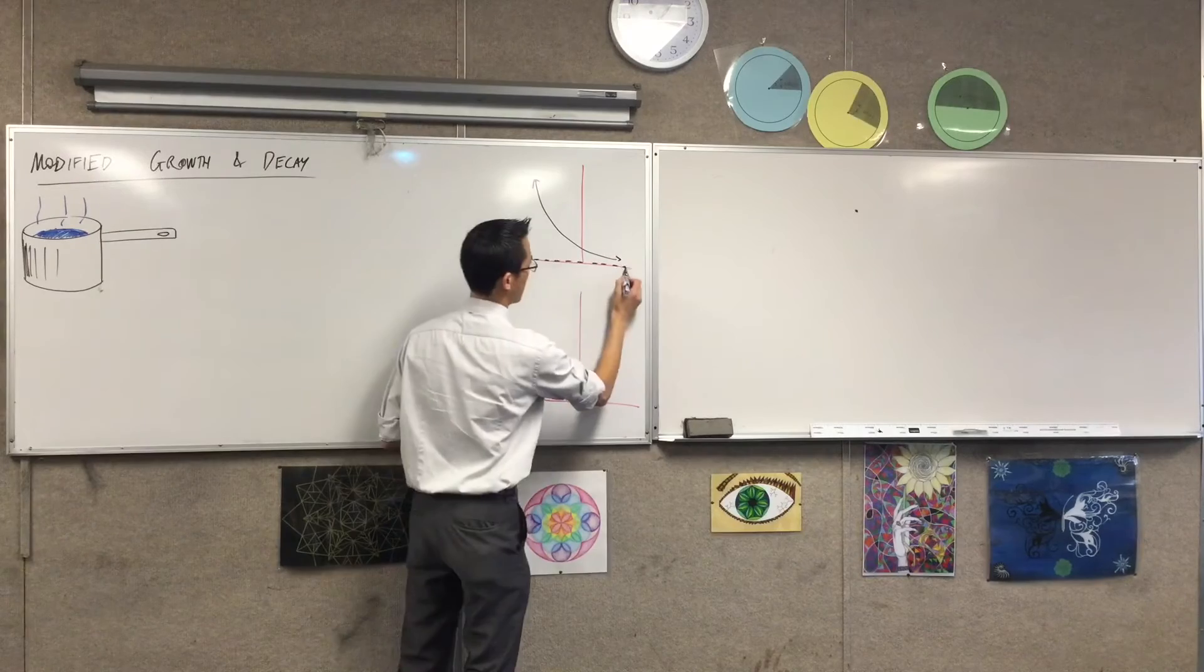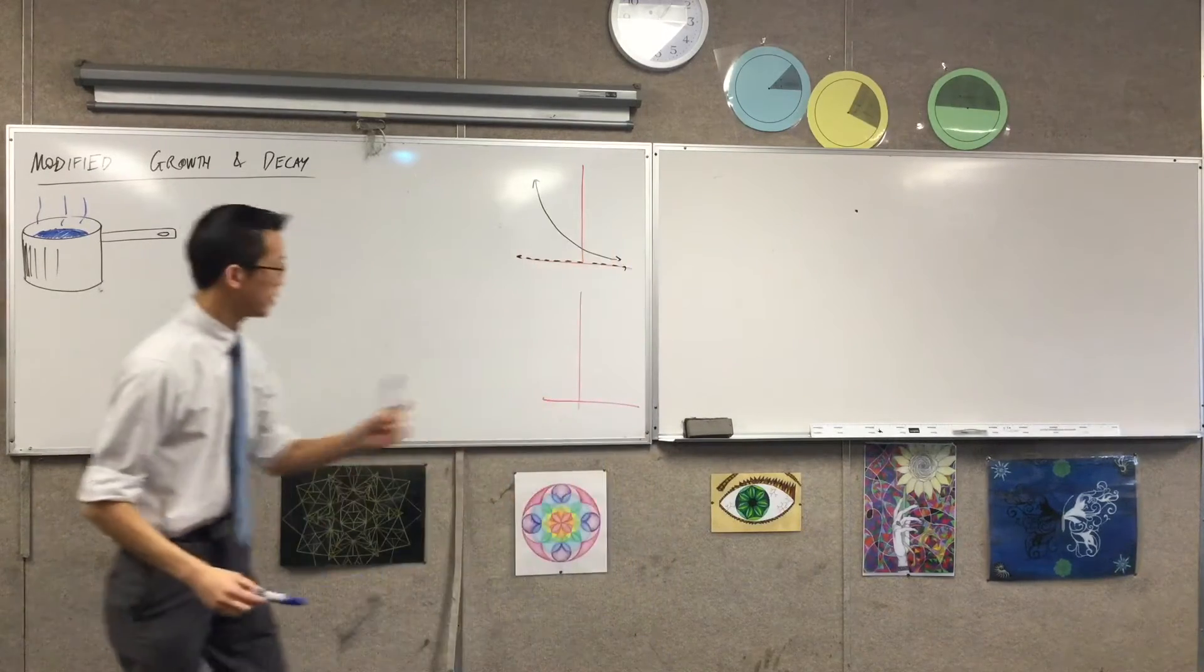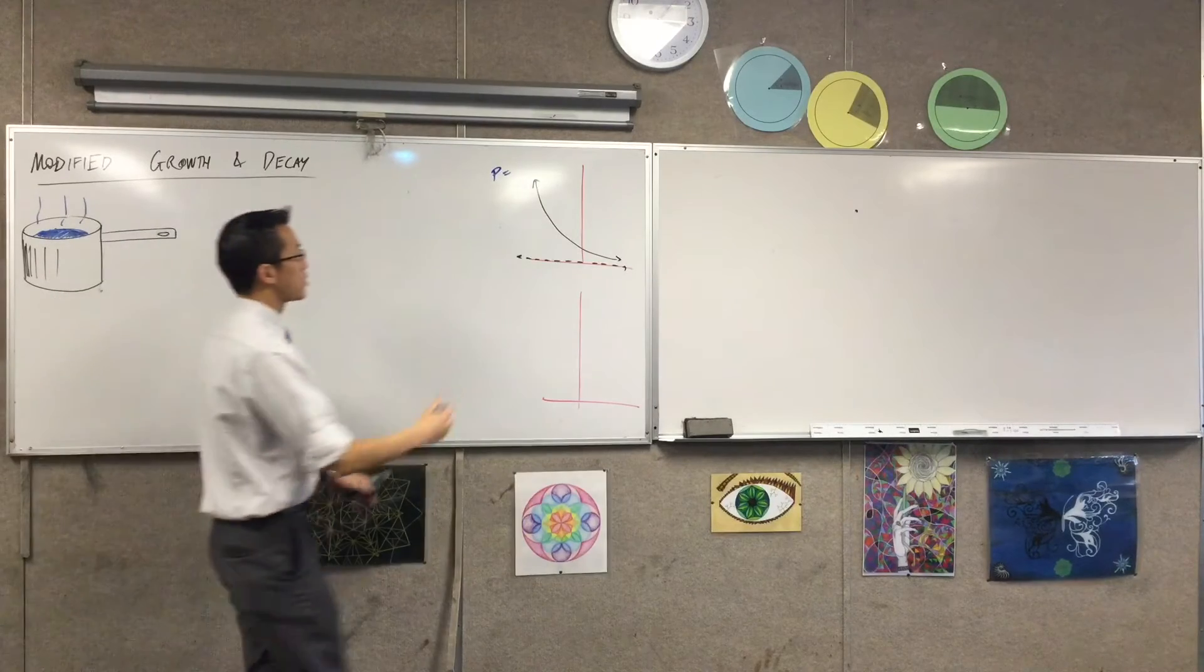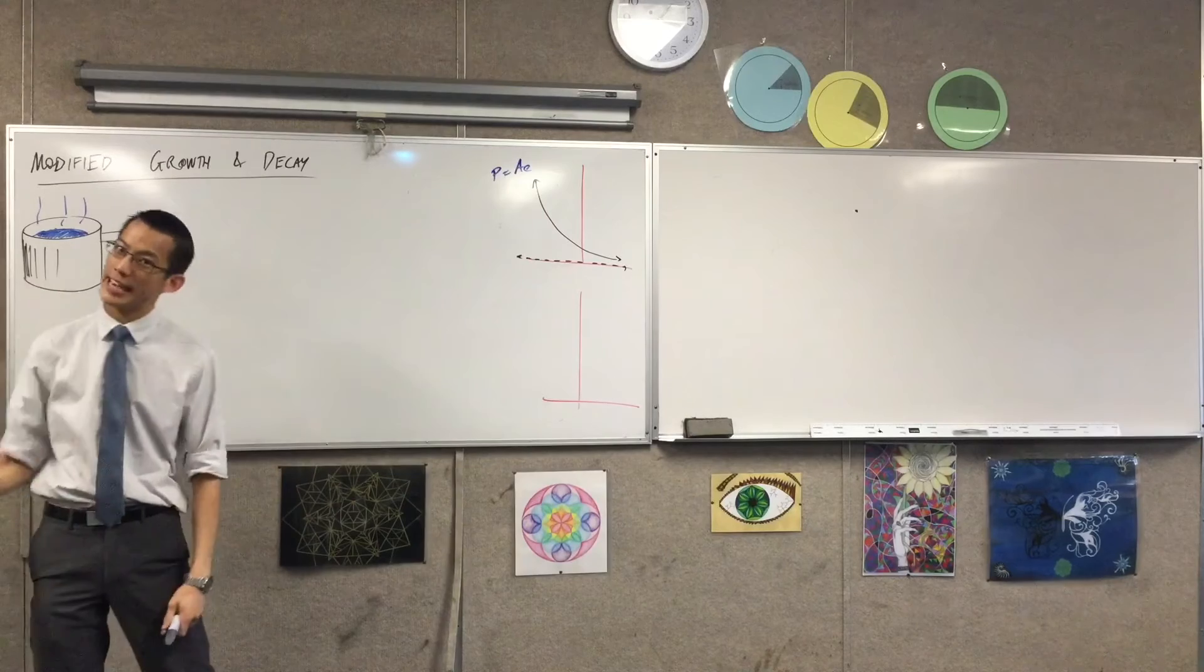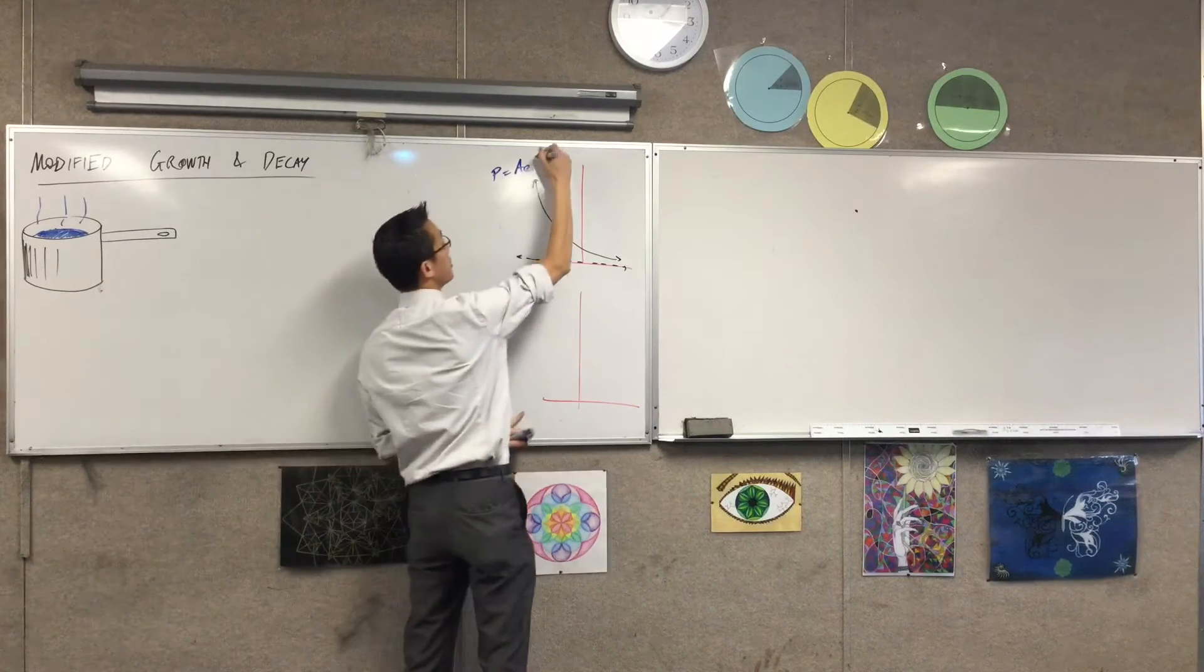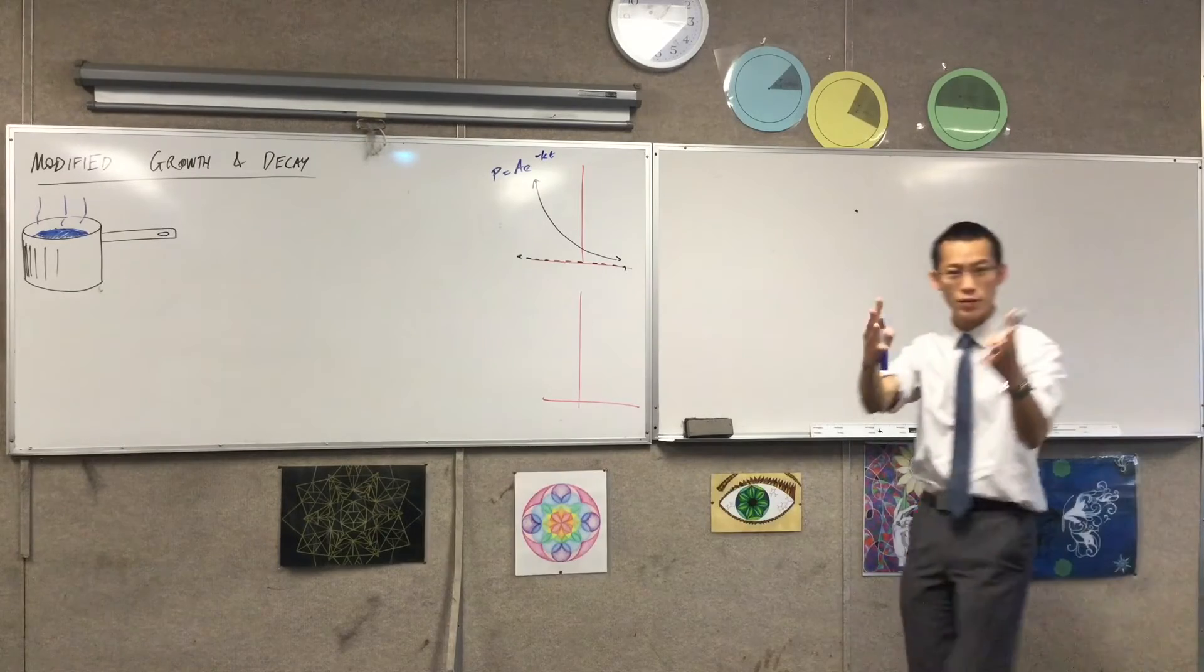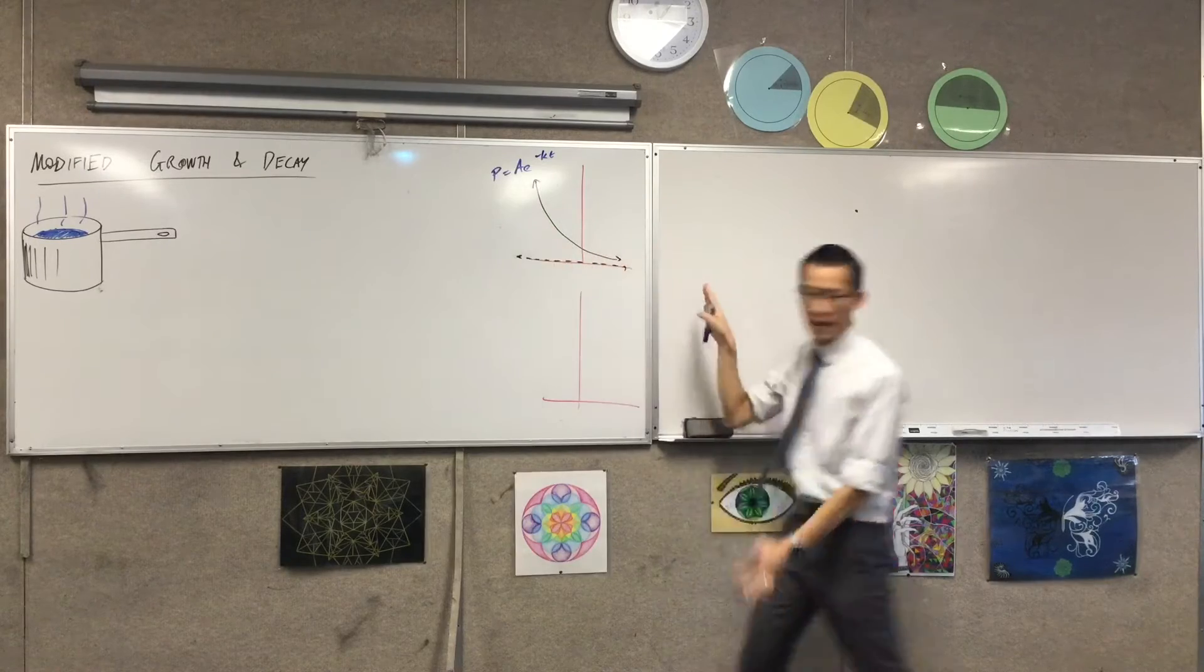So you can go ahead and you can label this, for example, p equals, now it's decay right, so when you've got your ae to the something here in order to make it decay rather than growth, what am I going to have up there? That minus sign. I mean we know that k is a constant but we tend to define k as a positive constant so that when you look at this you see the minus sign and you're like oh yeah it's decay.